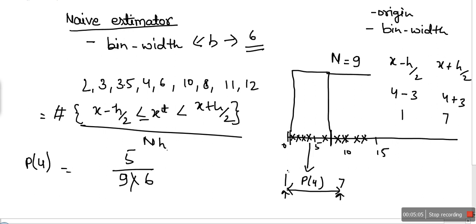In naive estimator, we don't need origin. Whatever x we want to compute probability for, we consider that x as the center of the bin, and then we see how many data points are in the same bin as x. Thank you very much for watching.